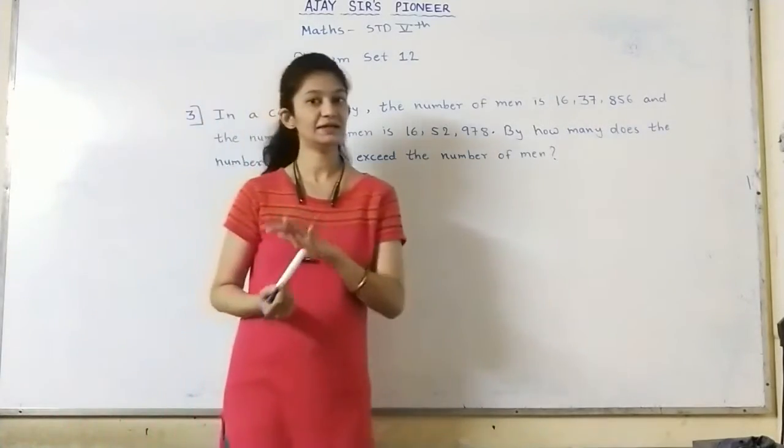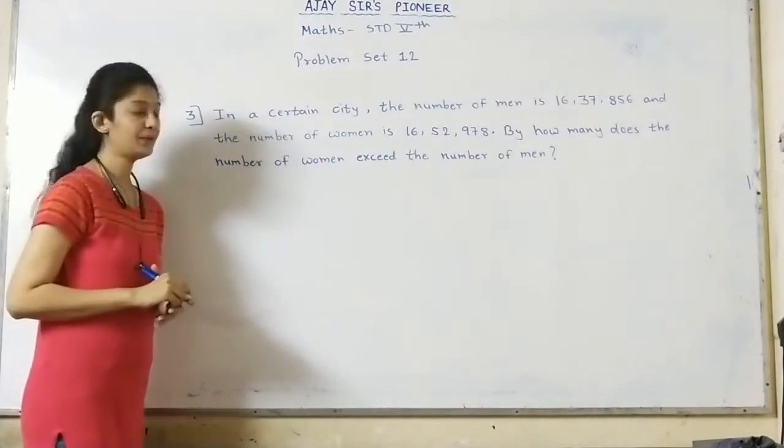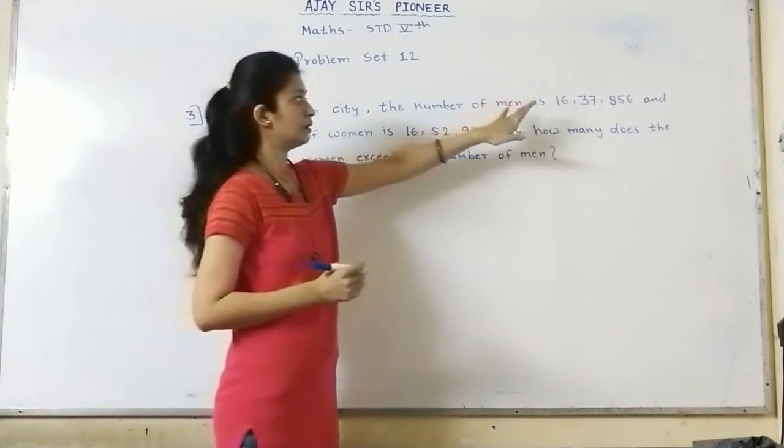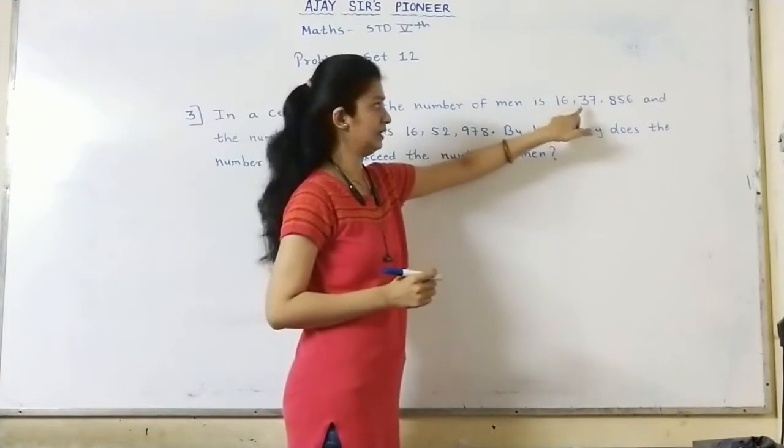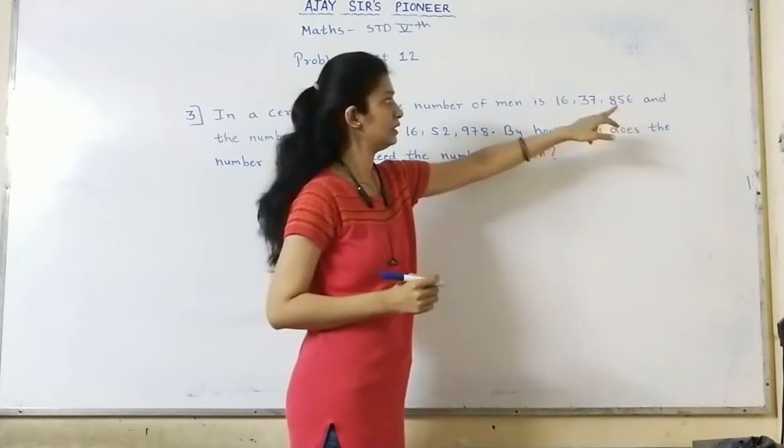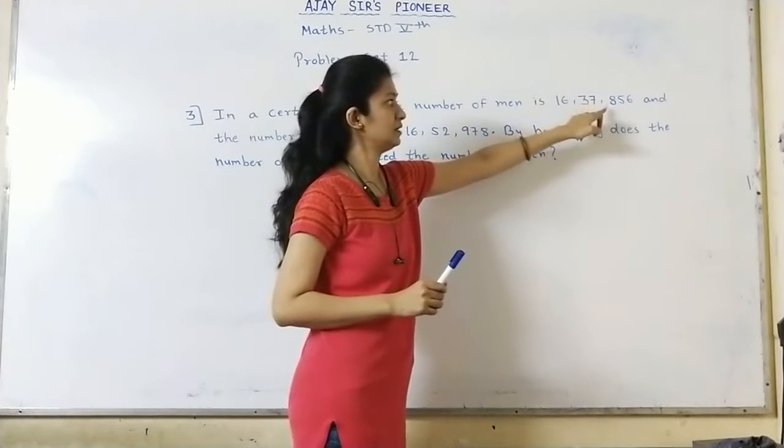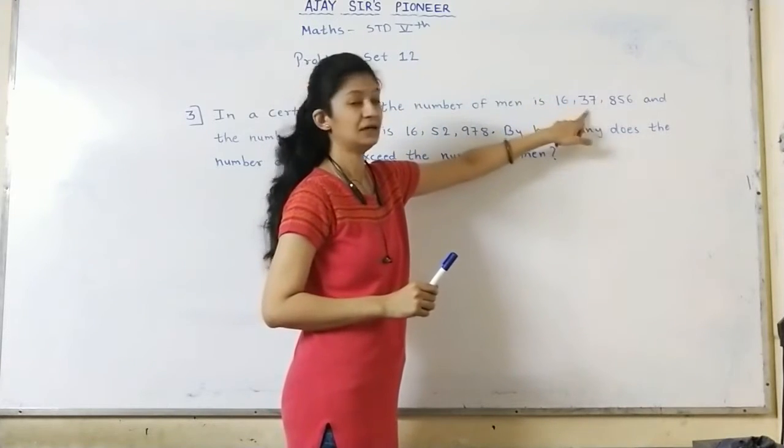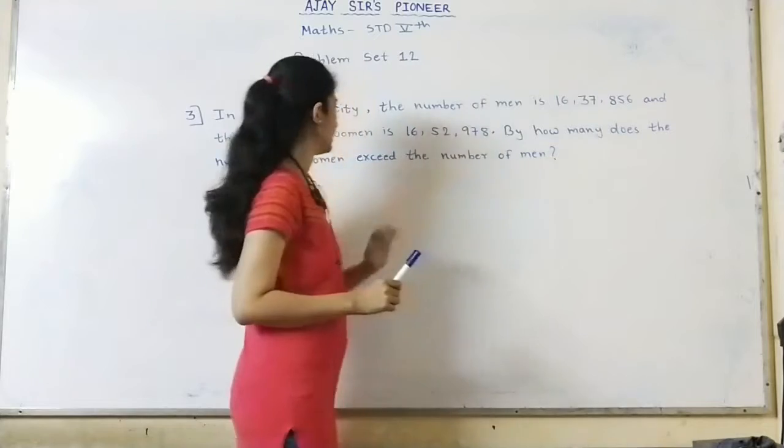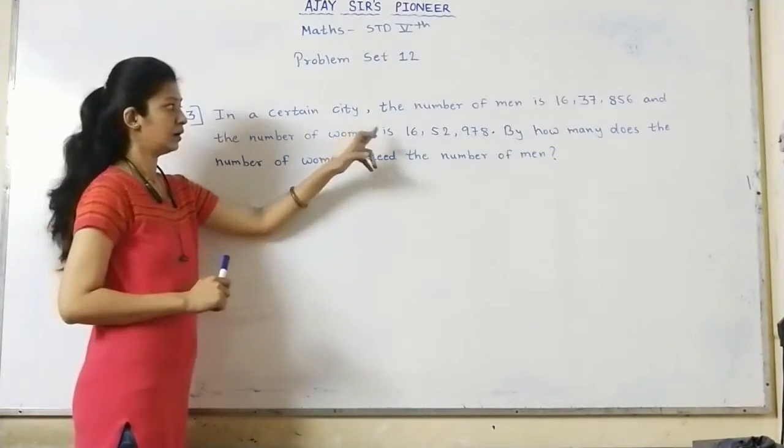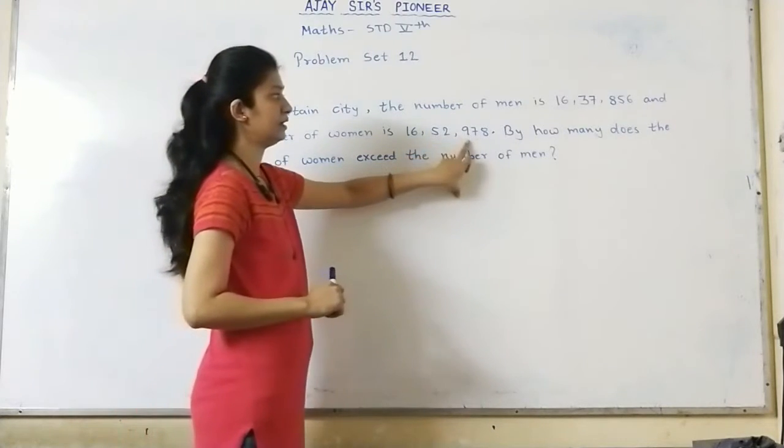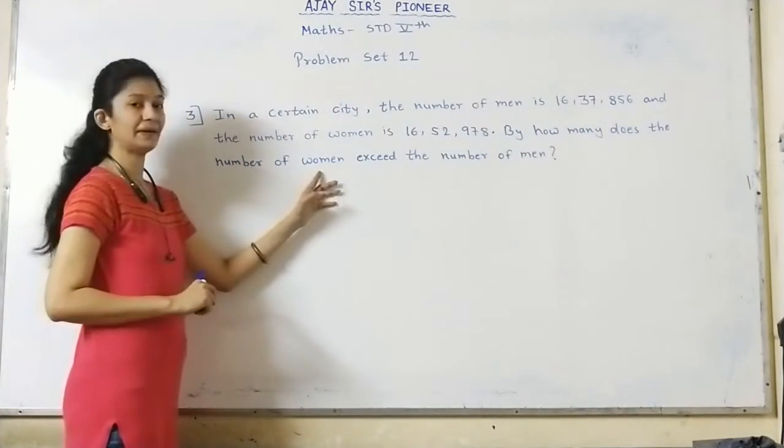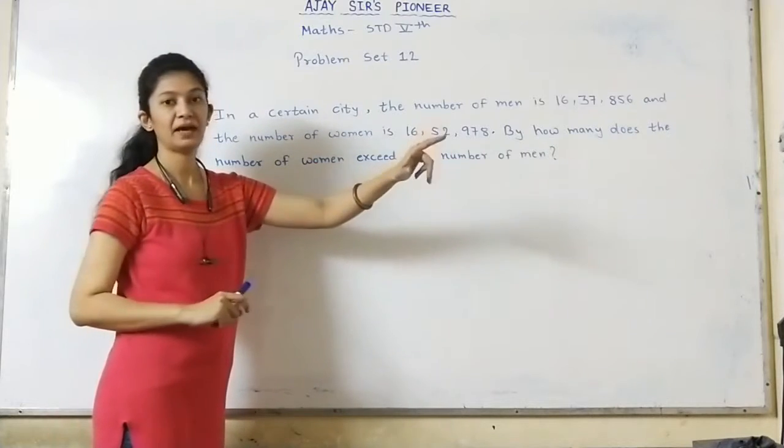Okay children, so let's solve our third question. Read the question properly. In a certain city, the number of men is 16,37,856. There are seven digits - you need ten, hundred, thousand, ten thousand, lakh and ten lakh. So we read it as 16,37,856. And the number of women is 16,52,978.